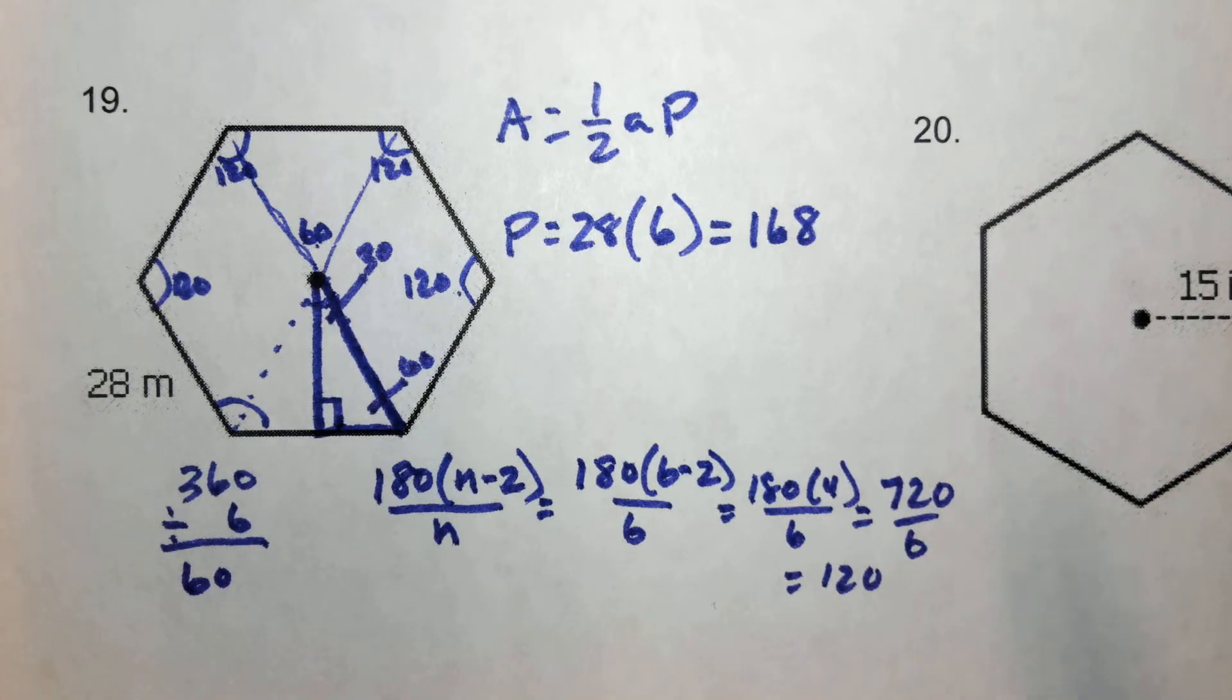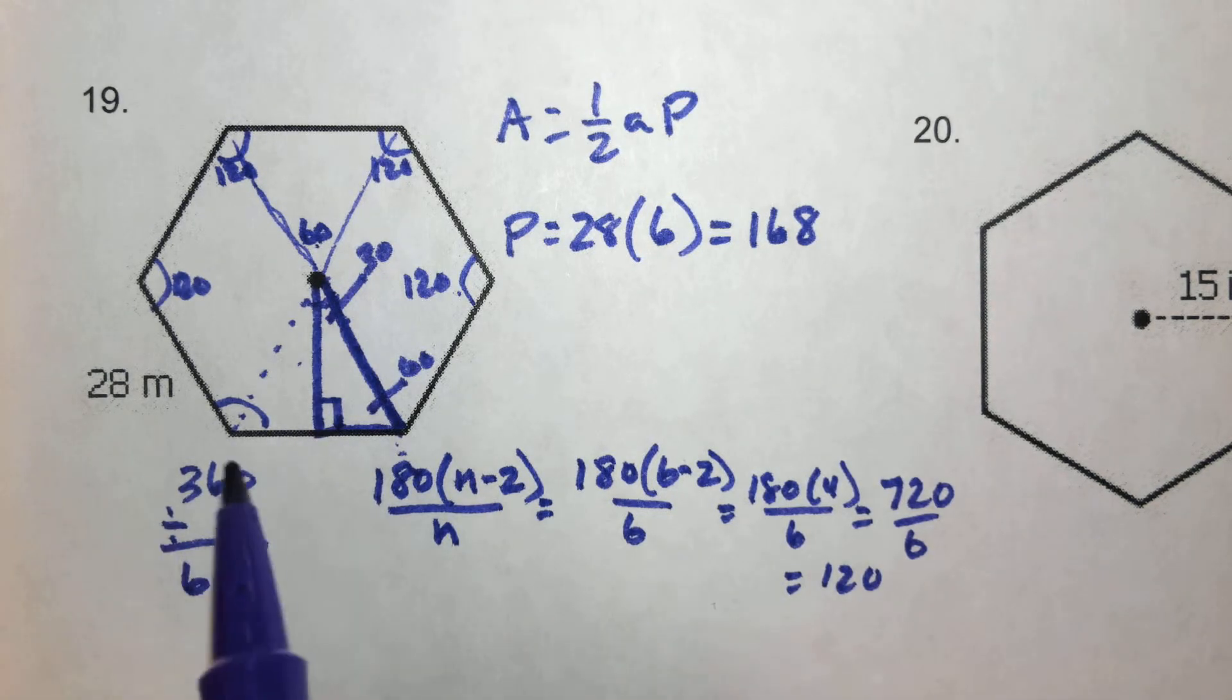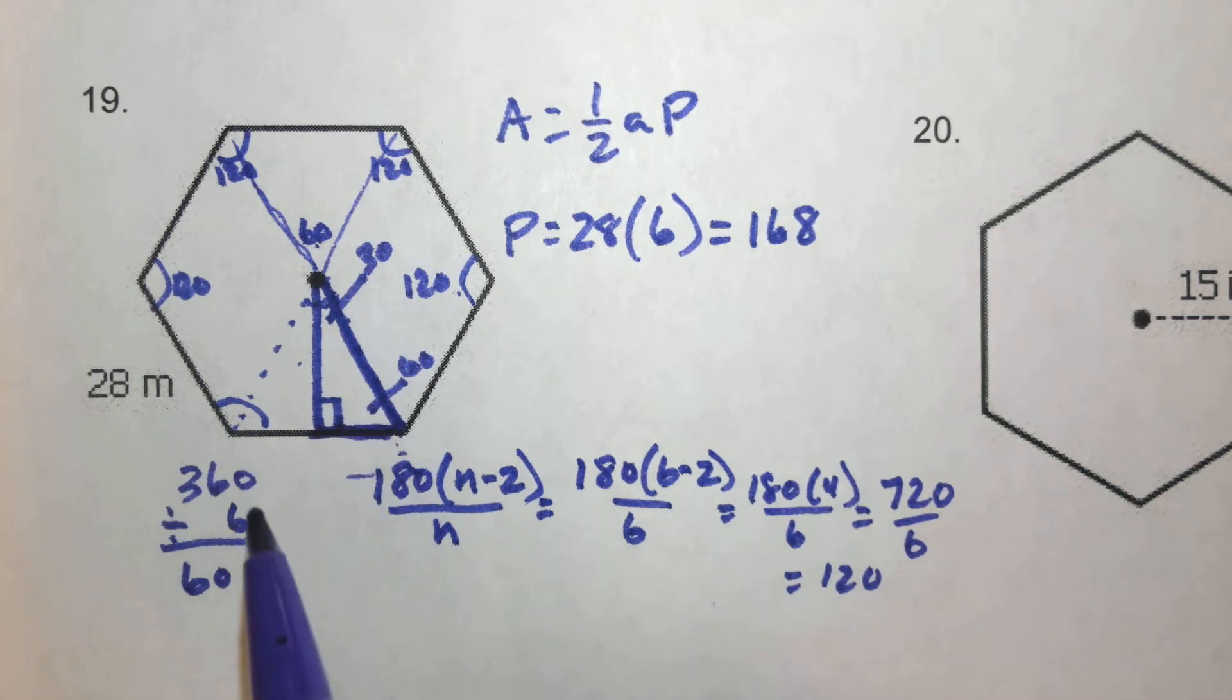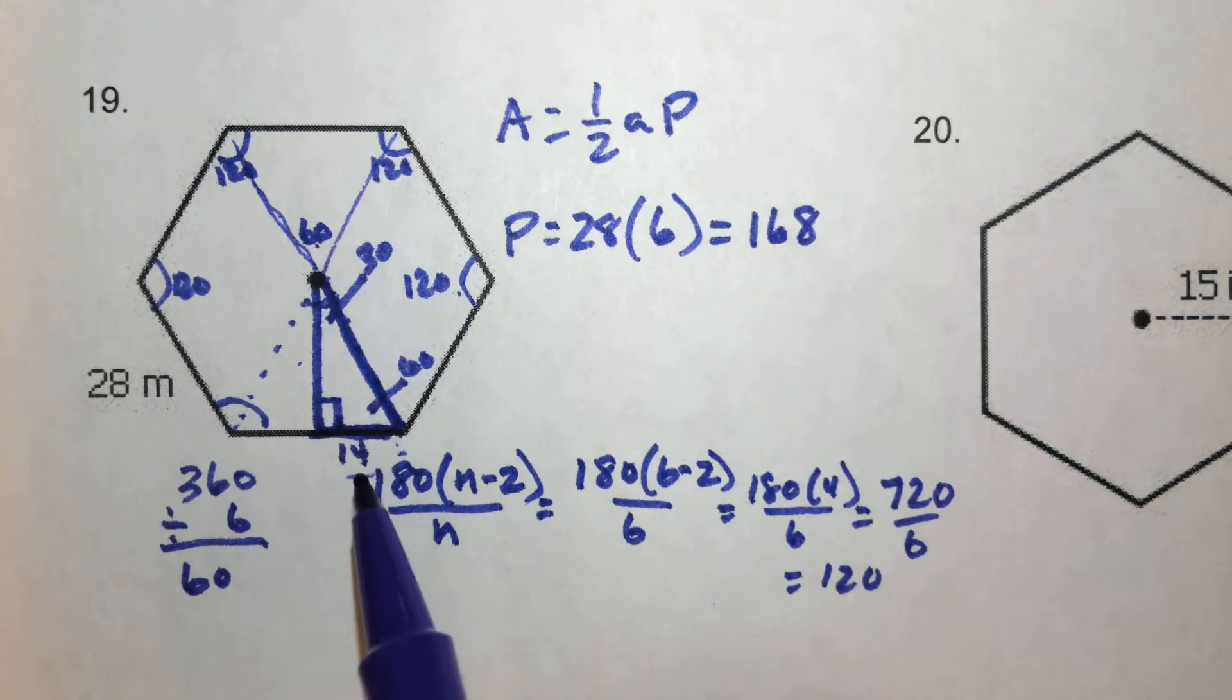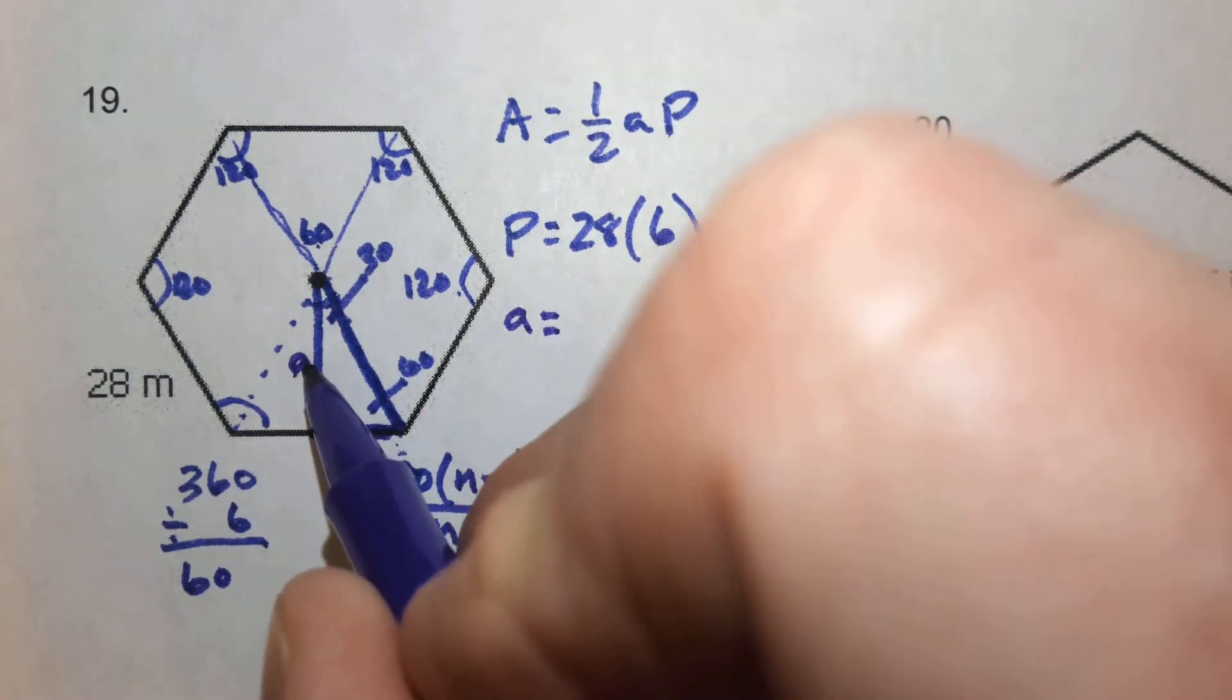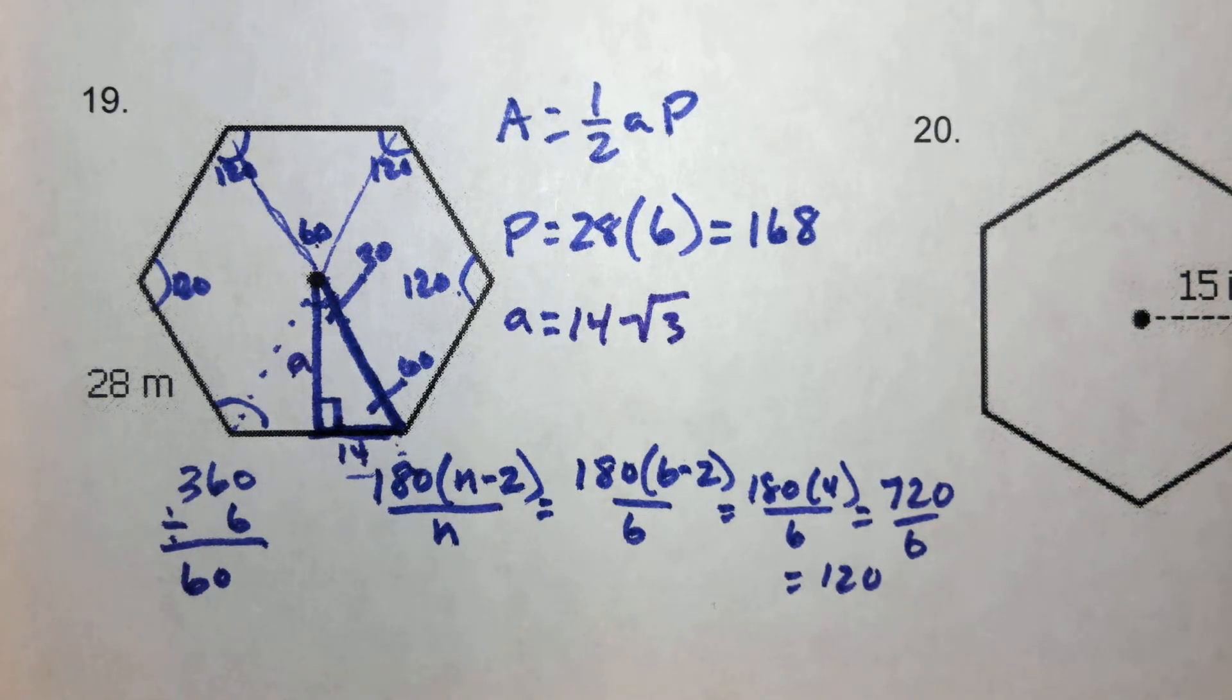So we can use some shortcuts here. If we know what this shortest leg of our right triangle is, we can multiply that by the square root of 3 and get the apothem. This part of our triangle is half of the whole side here. And if the whole side is 28, then this side has to be 14. So we can take 14 times the square root of 3 to get our apothem. Our apothem is 14 times the square root of 3. And if you wanted to put that in your calculator, 14 times the square root of 3 is 24.25.